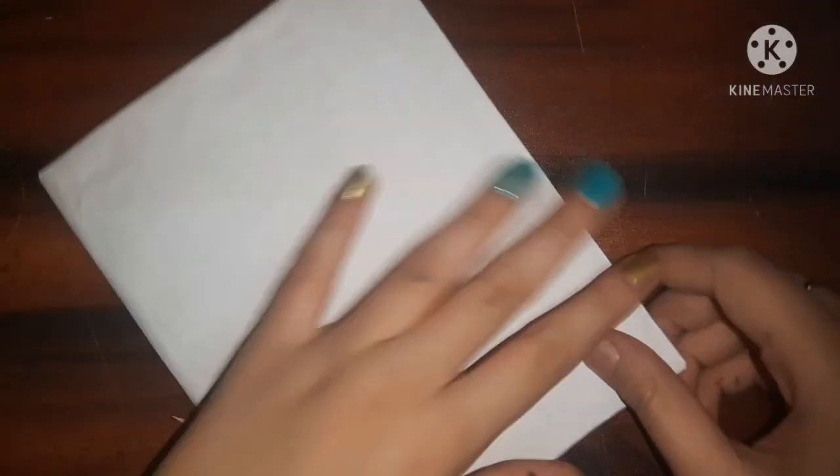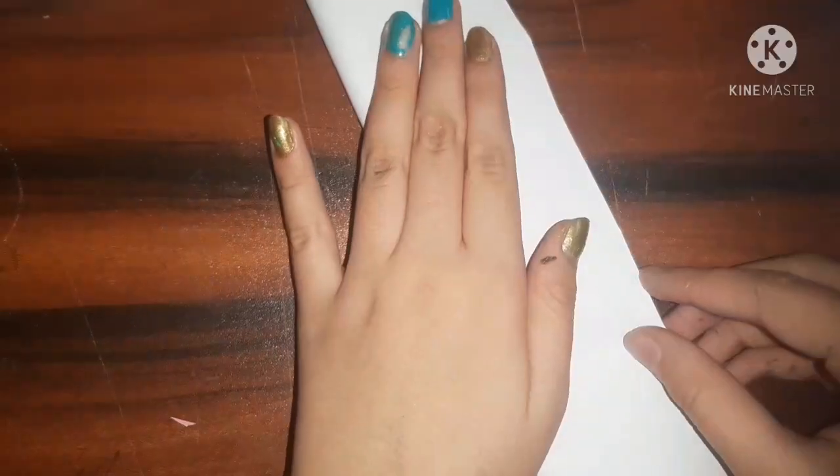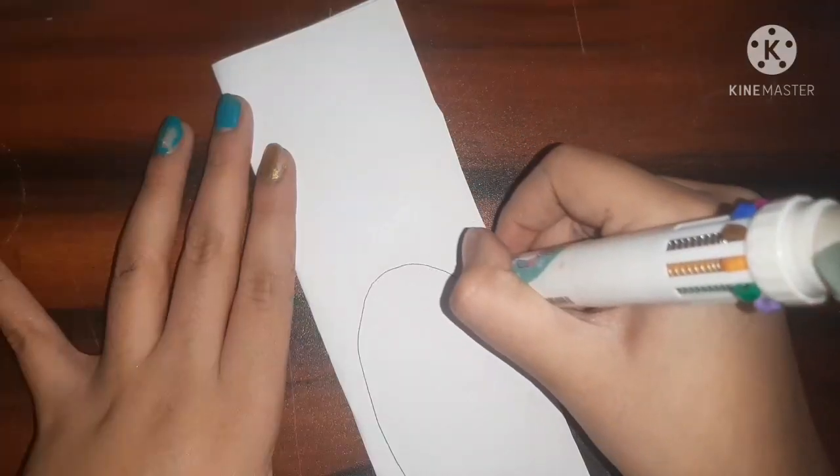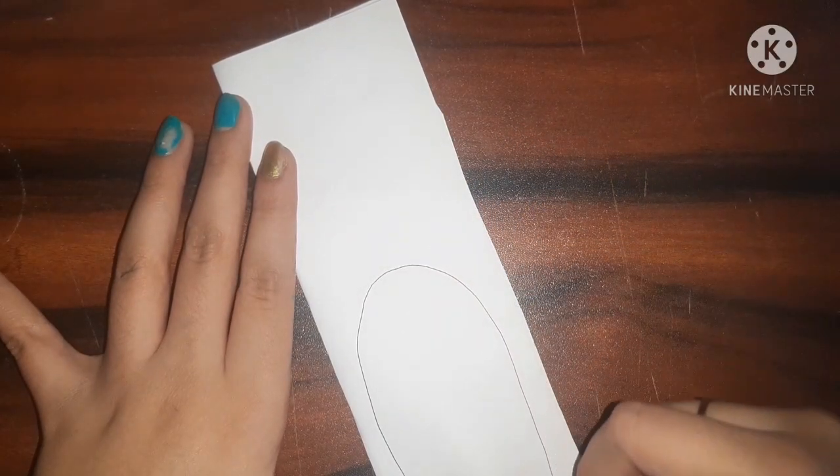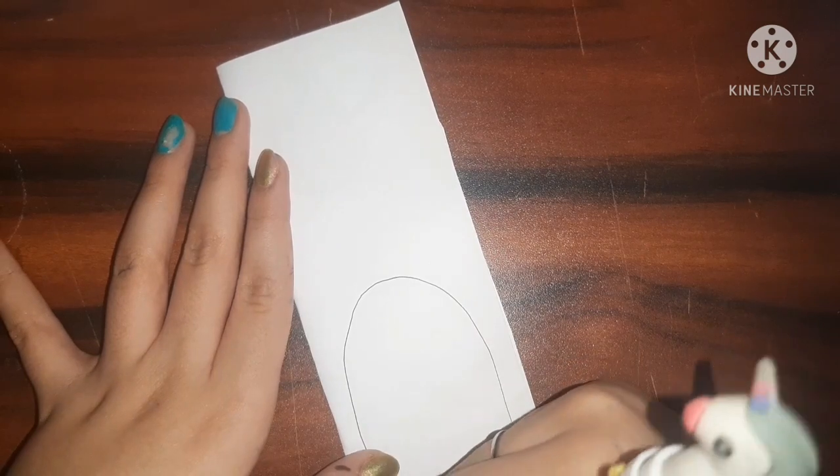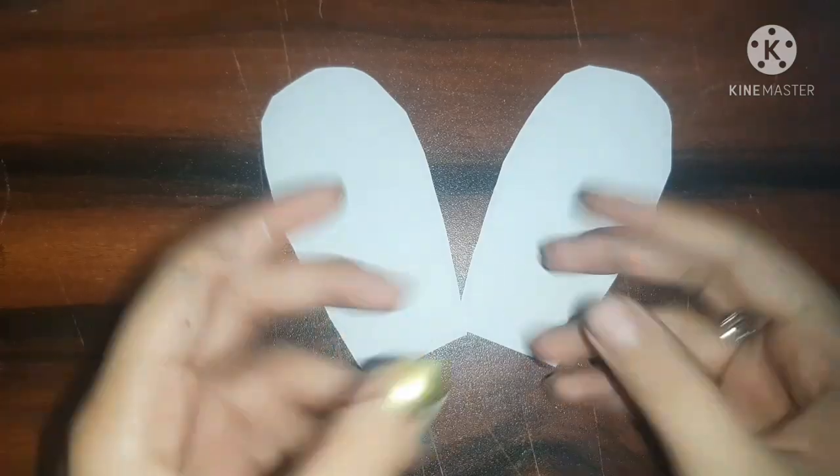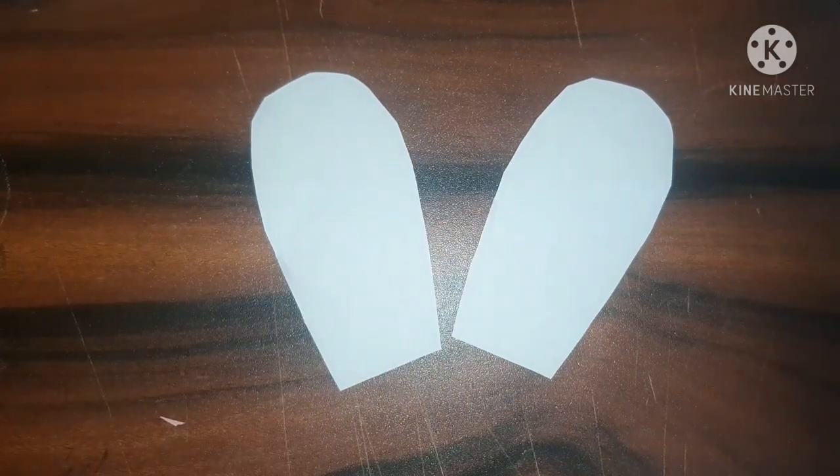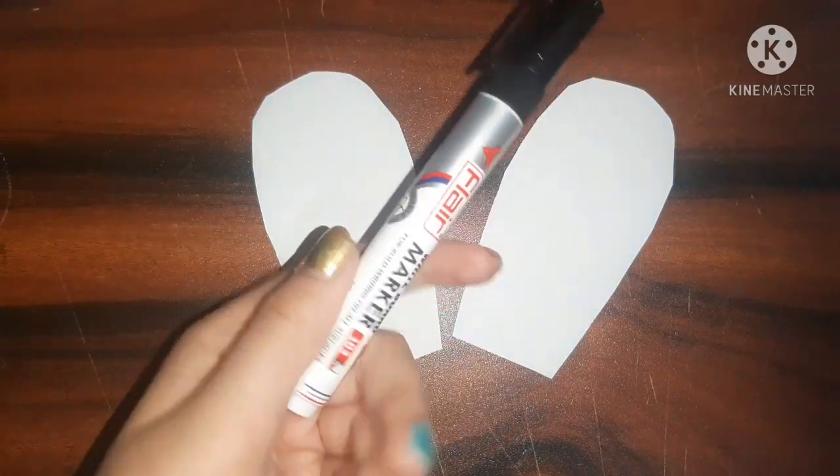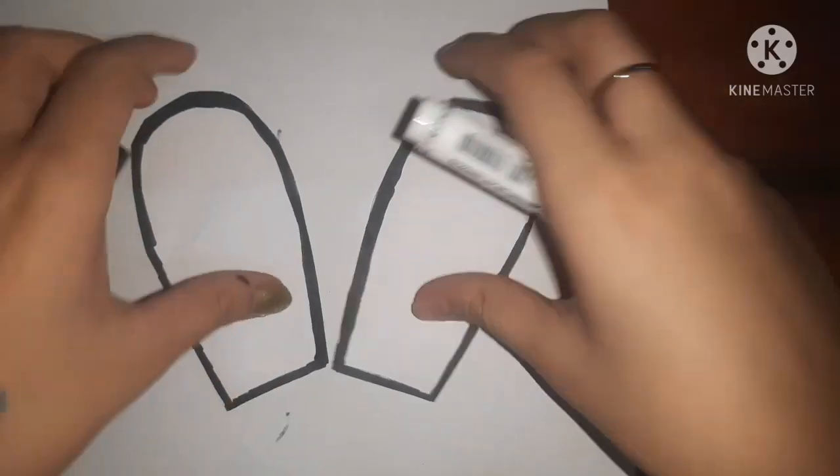After that guys I am just going to take a white paper strip and I'm going to make a bunny ear on it. And when I'm satisfied I'm just going to cut it out with the help of a scissor. And after that again I'm going to give a nice black outline.